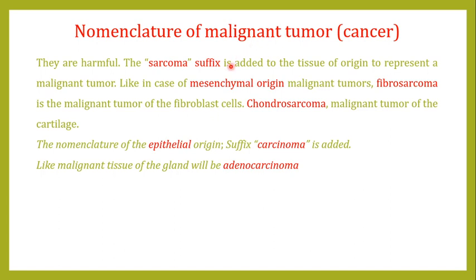I told you that the suffix sarcoma is added to the tissue of origin to represent a malignant tumor. For example, the malignant tumor of the fibroblast cells is known as fibrosarcoma. Similarly, the malignant tumor of cartilage is known as chondrosarcoma. For epithelial origin malignant tumors, the suffix carcinoma is added — for example, the malignant tumor of glands is known as adenocarcinoma.